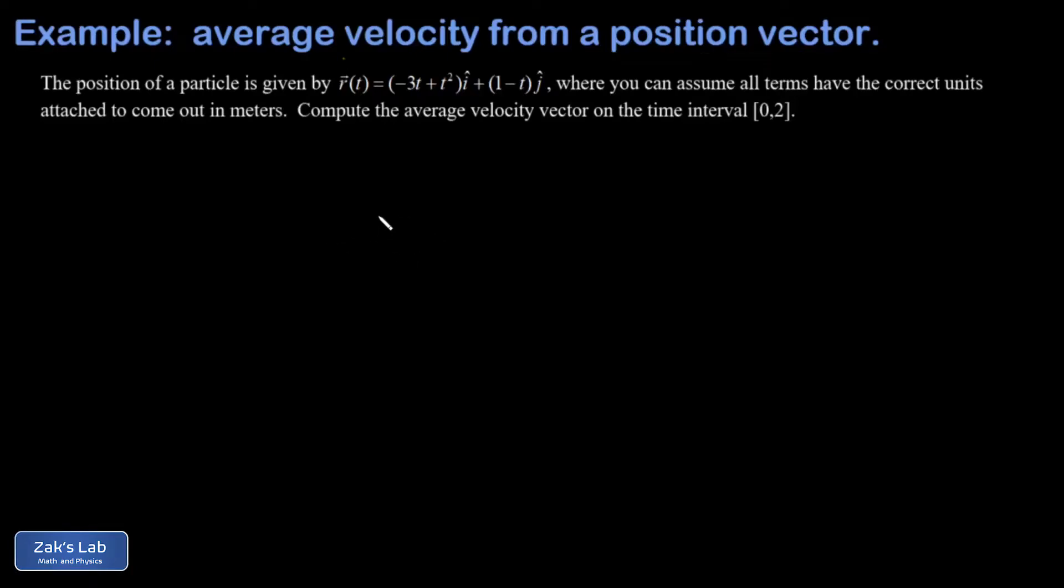In this video, we're given a position vector for a particle. That's r of t equals negative 3t plus t squared times i hat plus 1 minus t times j hat.